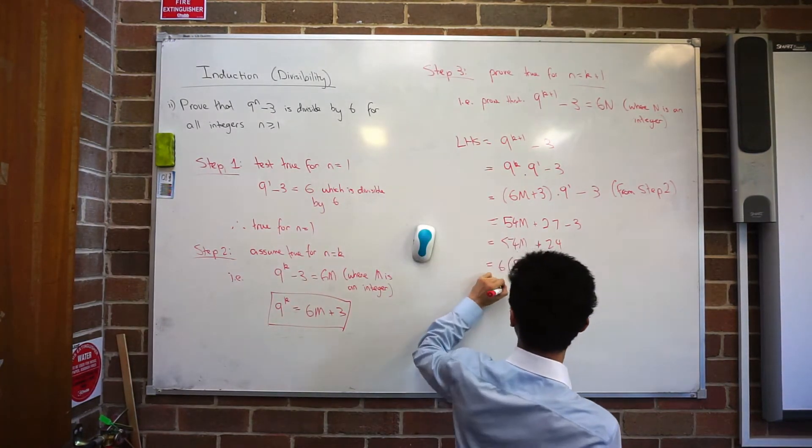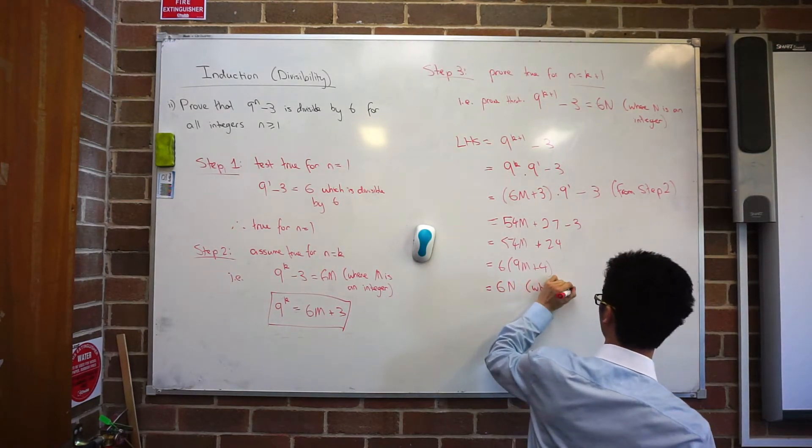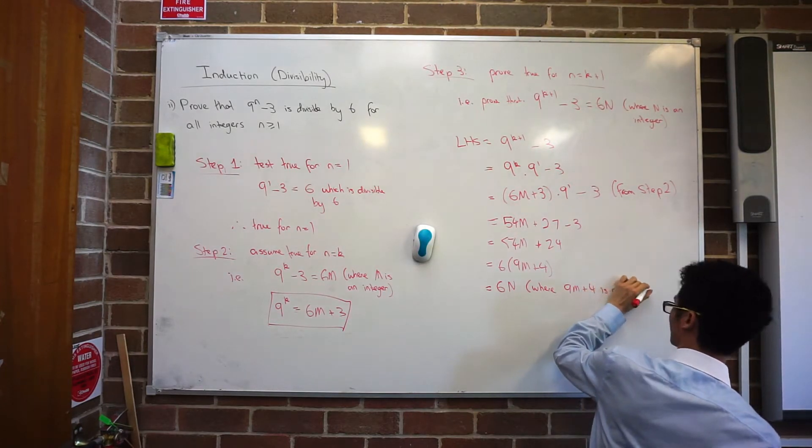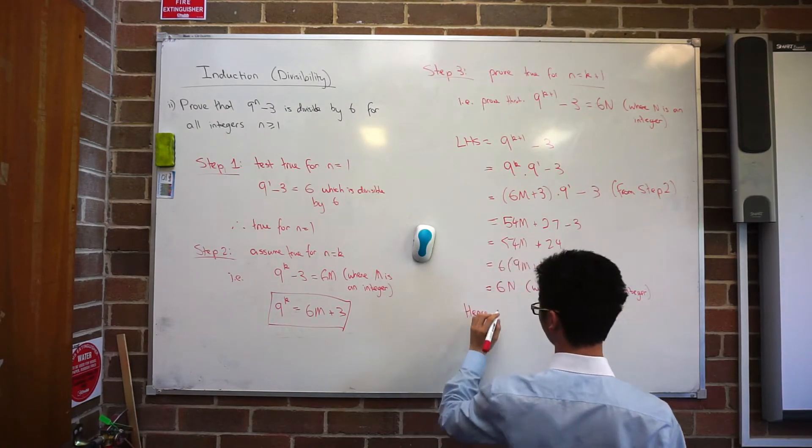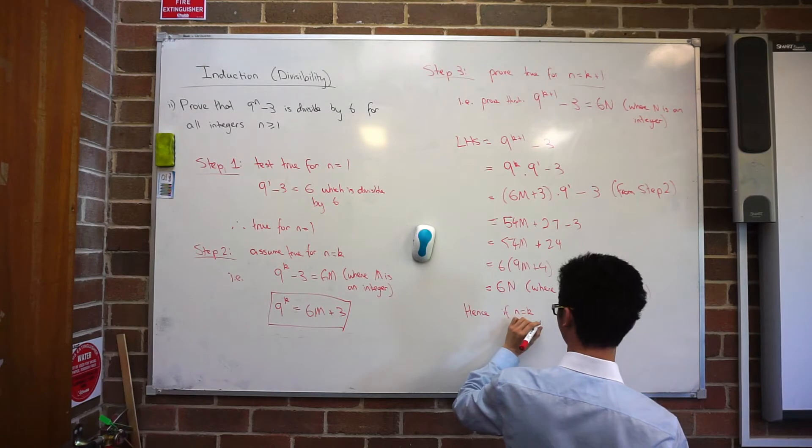And then I can just write that as 6n where 9m plus 4 is an integer. And then Mitch's favorite part. What do you write next? Therefore, the result is true by mathematical induction.